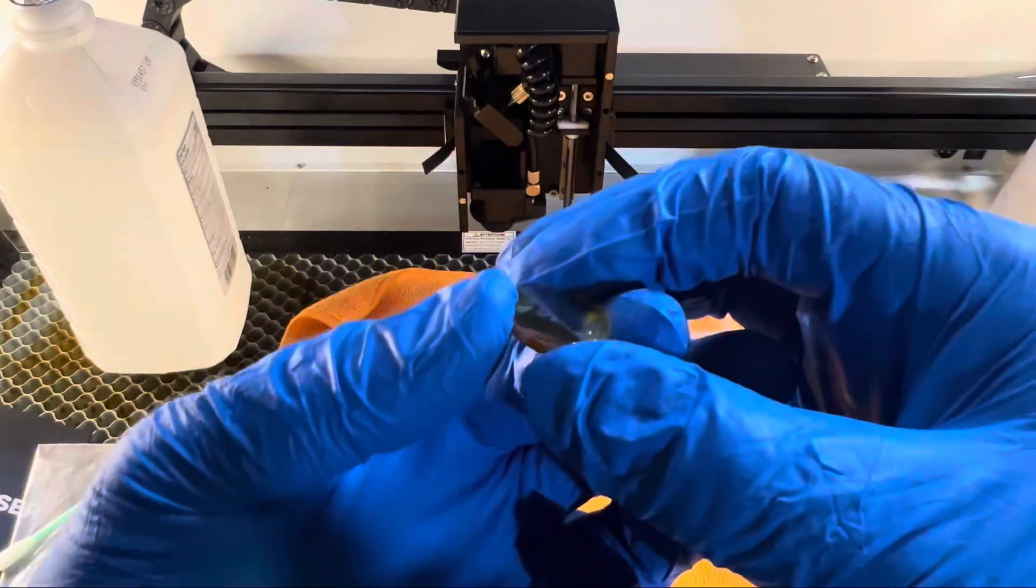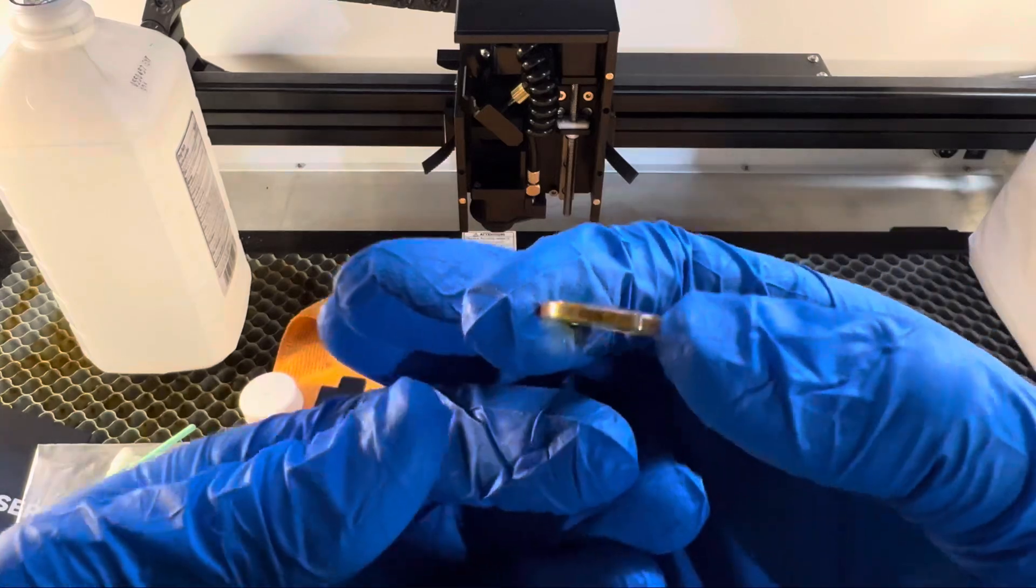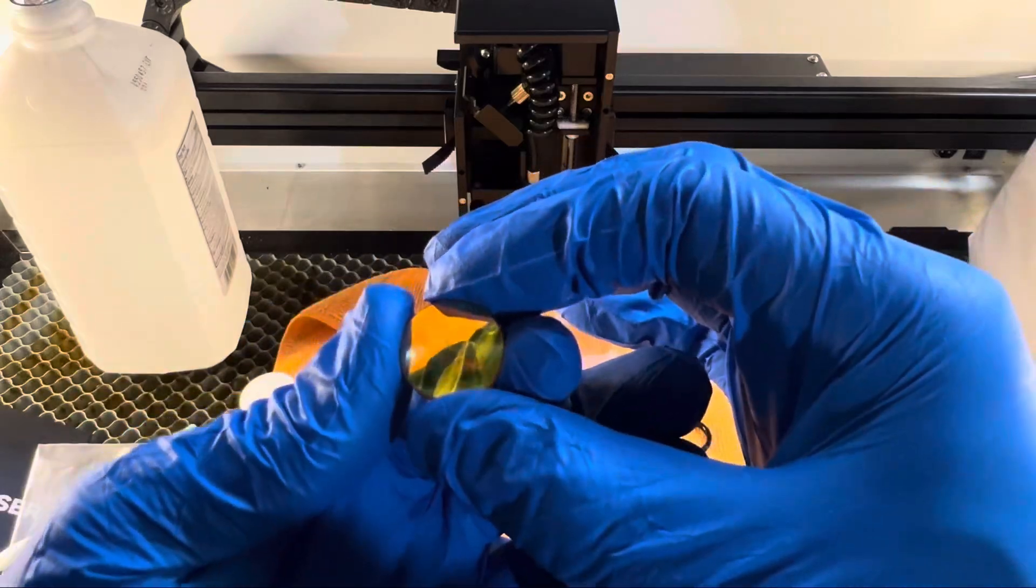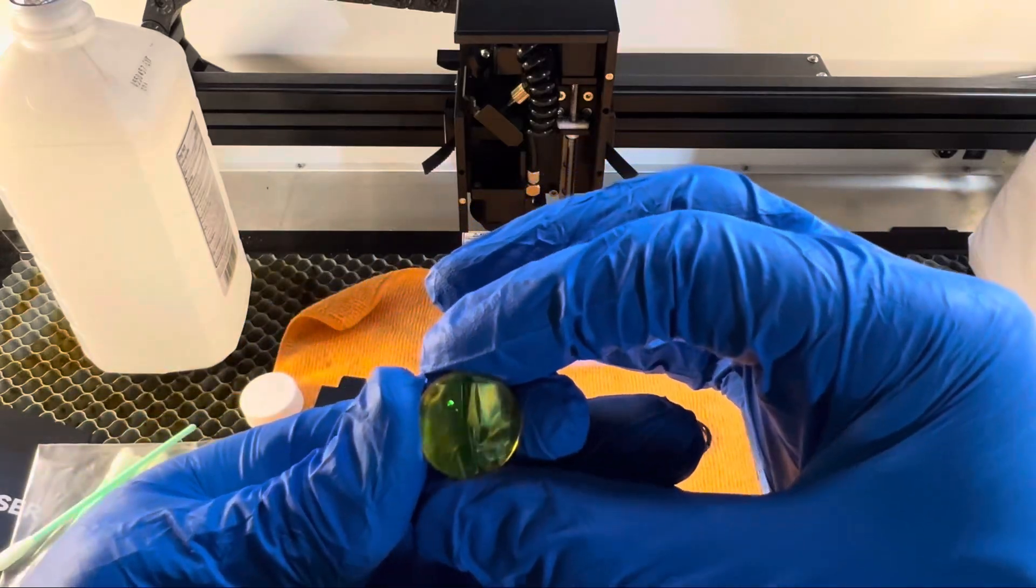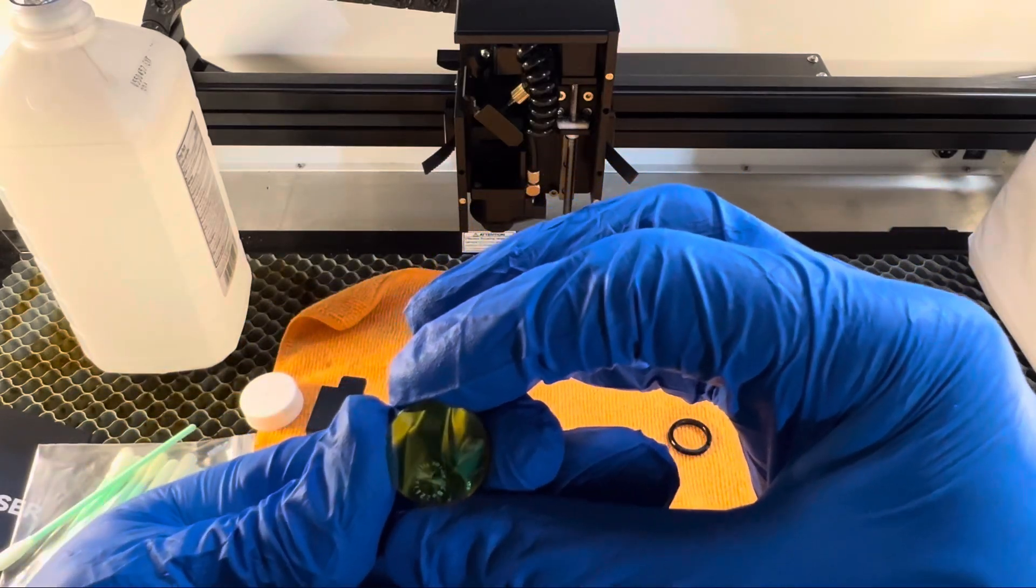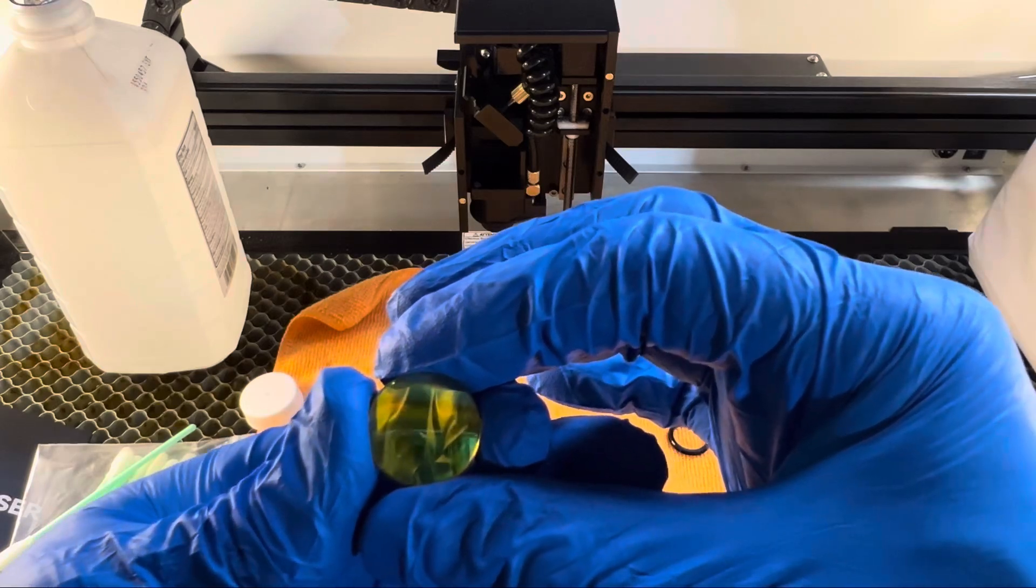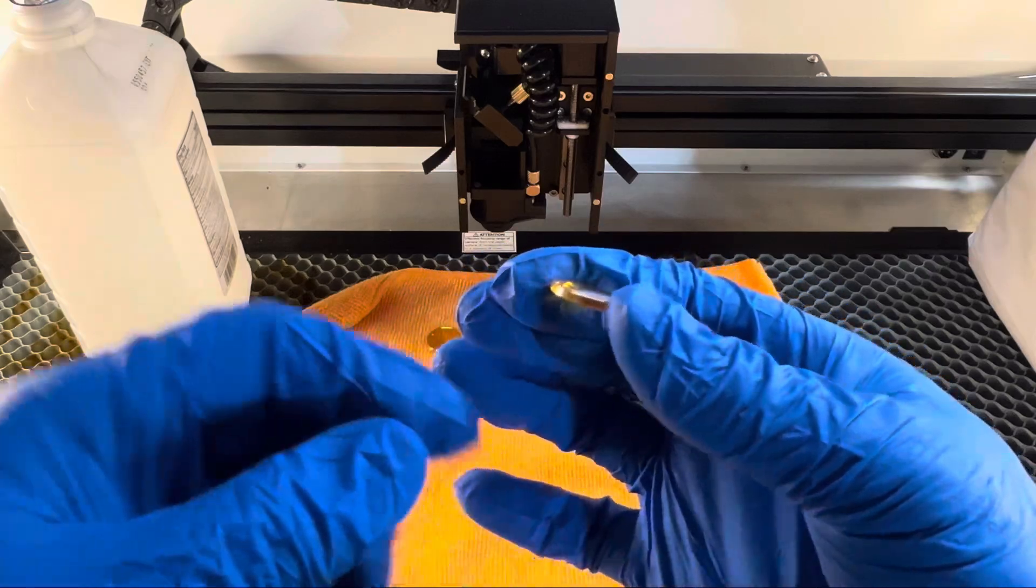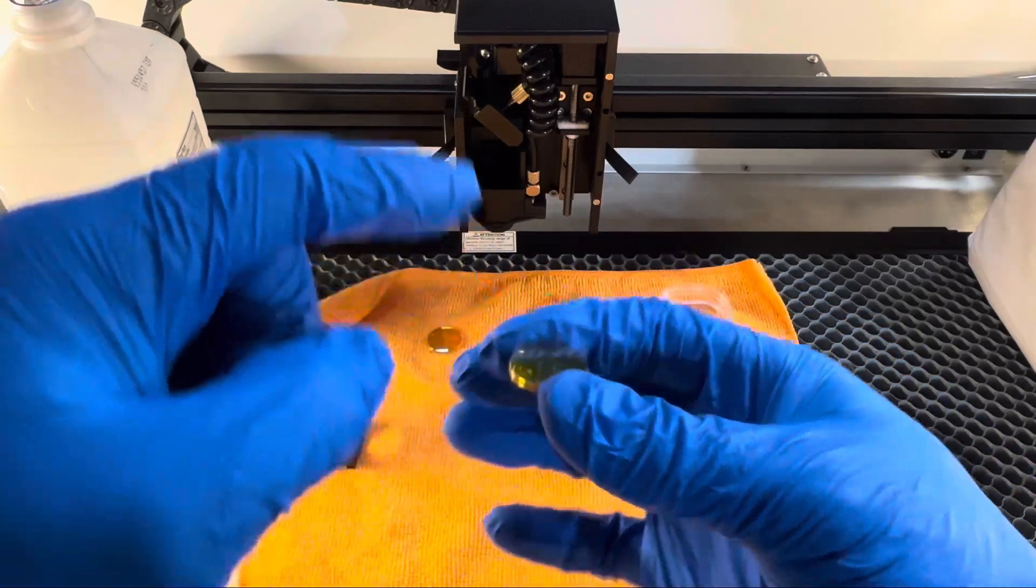The trick to installing this correctly—it has to be round side up—is that you'll be able to see your reflection. You can't really see my head, but you can see the camera right there. That's how you know you're installing it right, because it has to be round side up.